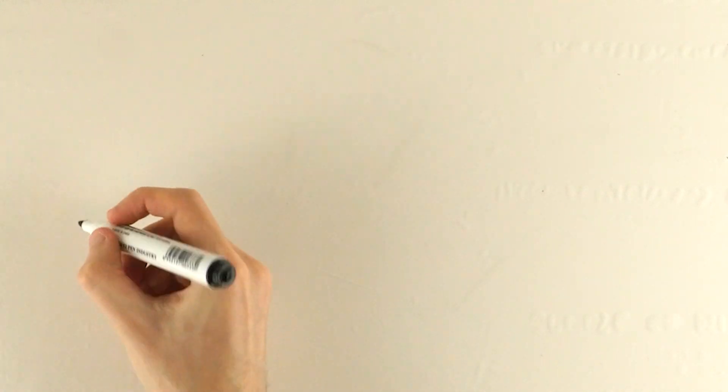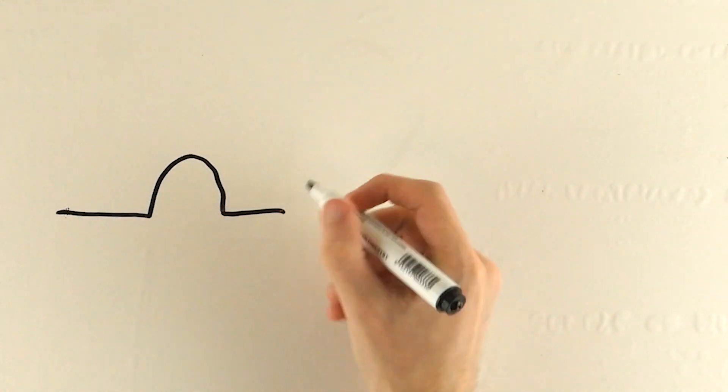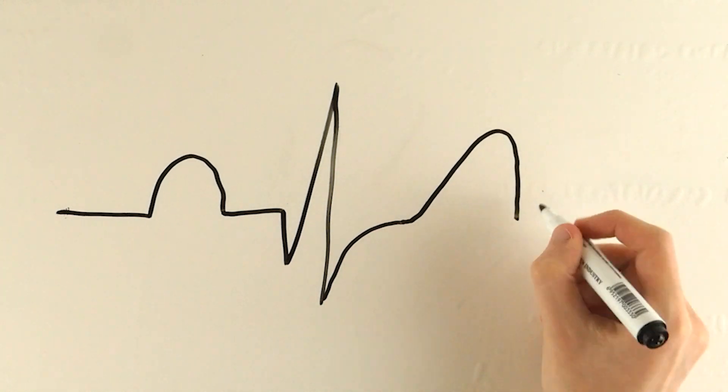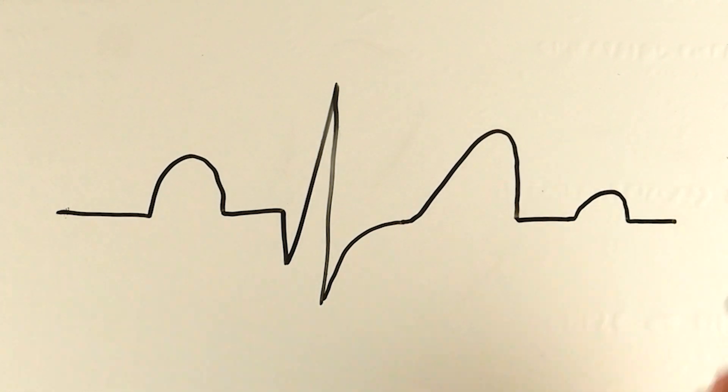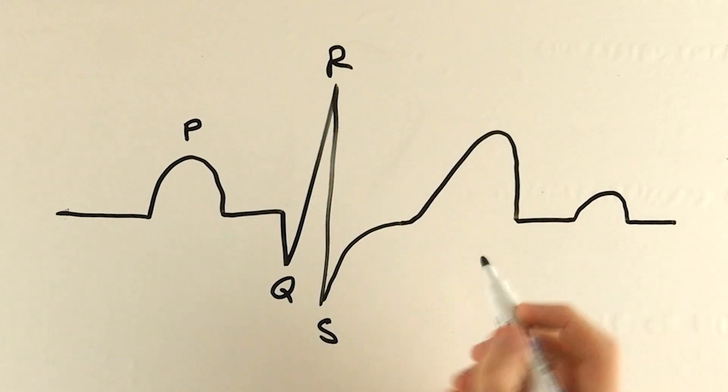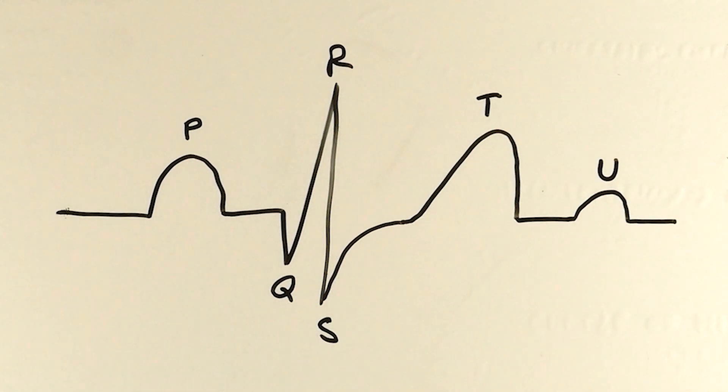So our typical ECG waveform looks something like this: flat line to small bump, down, big spike upwards, down again, back to the flat line, and then another two small bumps. So here's our ECG. I'll just label some of these really quickly and we can go through what each part means.